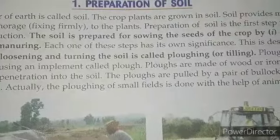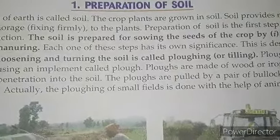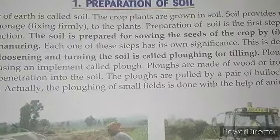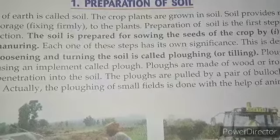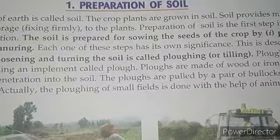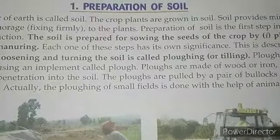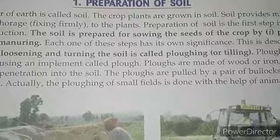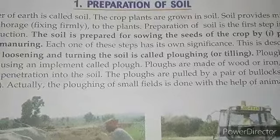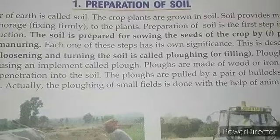These nomadic people ate raw materials and vegetables found in nature and started hunting animals for food. But later, they settled near the sources of water such as rivers and cultivated land to produce wheat and other food crops.